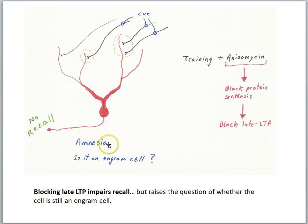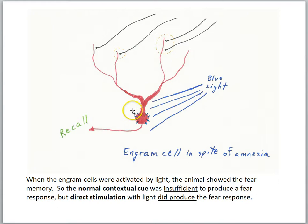It had amnesia. So blocking late LTP impairs recall, but raised the question of whether the cell is still an engram cell. After all, it was activated during the training. It's just that it did not enjoy the late LTP at these synapses.